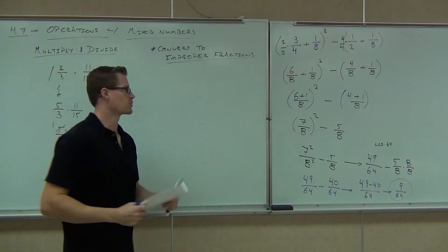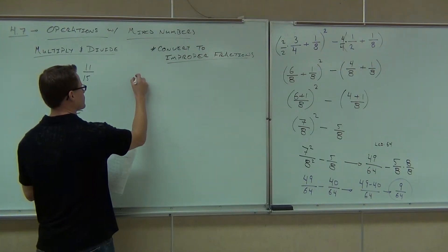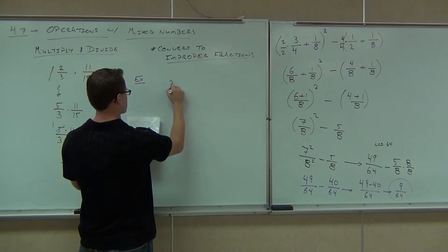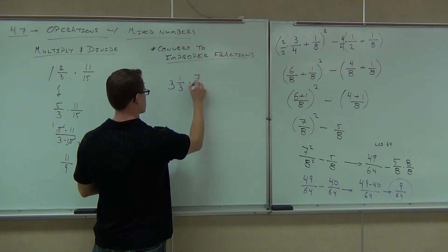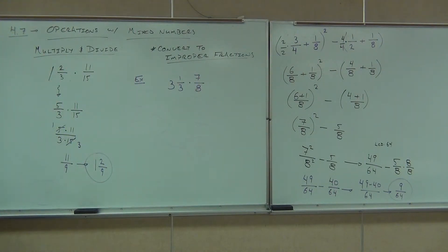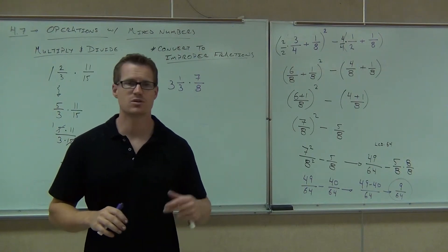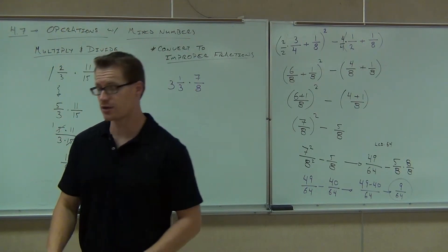I'd like you to try one of your own here real quick before we go any further just to make sure that you have the handle on this stuff. 3 and 1/3 times 7/8. Of course, we cannot just directly do this problem. You're going to have to convert it. So, I'm expecting you to convert this into an improper fraction and then do the operations like we've already learned how to do.